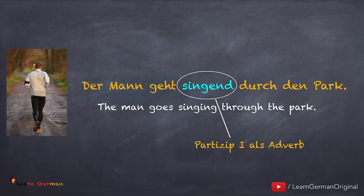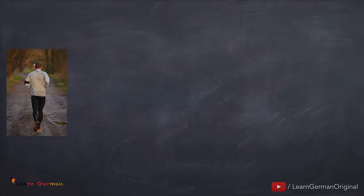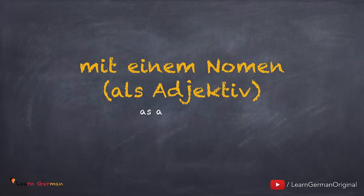In allen diesen Sätzen sieht man eine Gleichzeitigkeit. In diesem Beispiel: der Mann geht durch den Park und er singt. Zwei Aktivitäten finden zur gleichen Zeit statt.